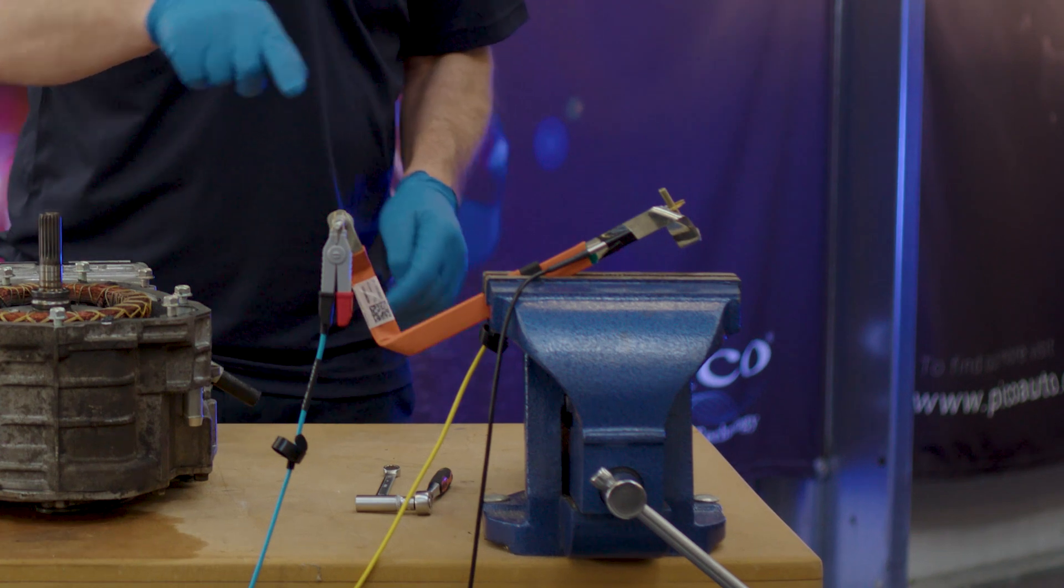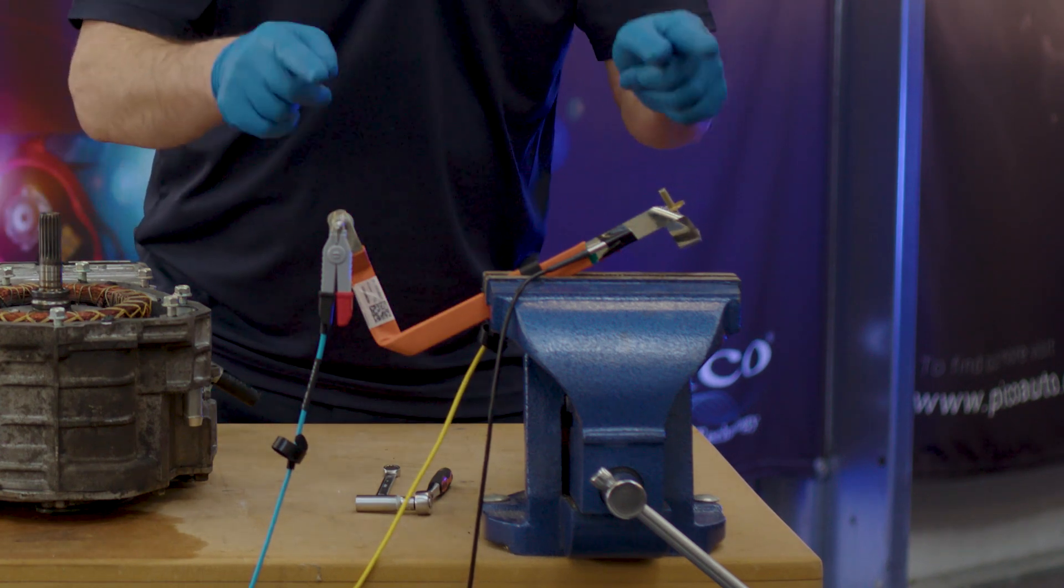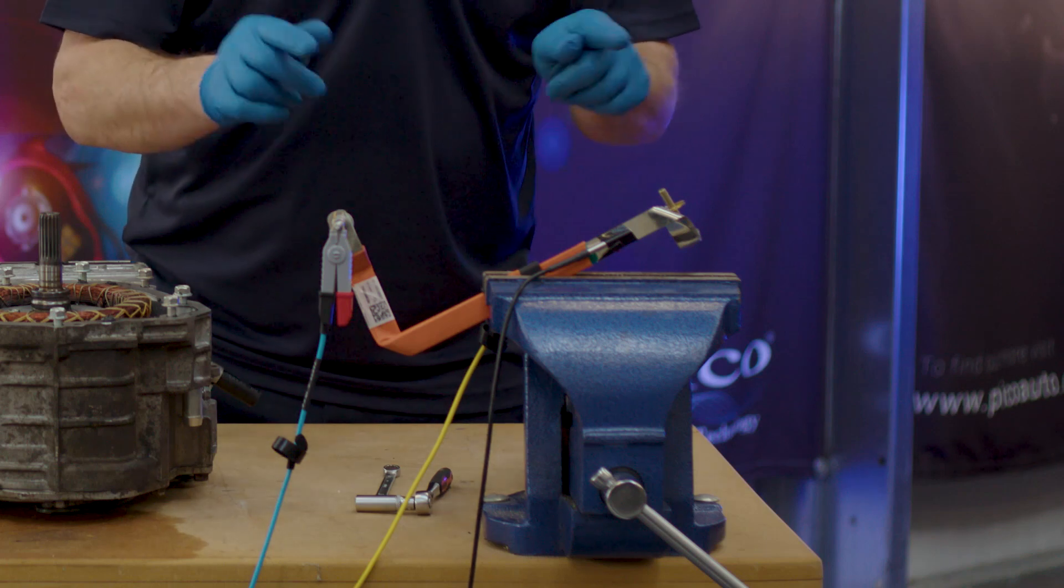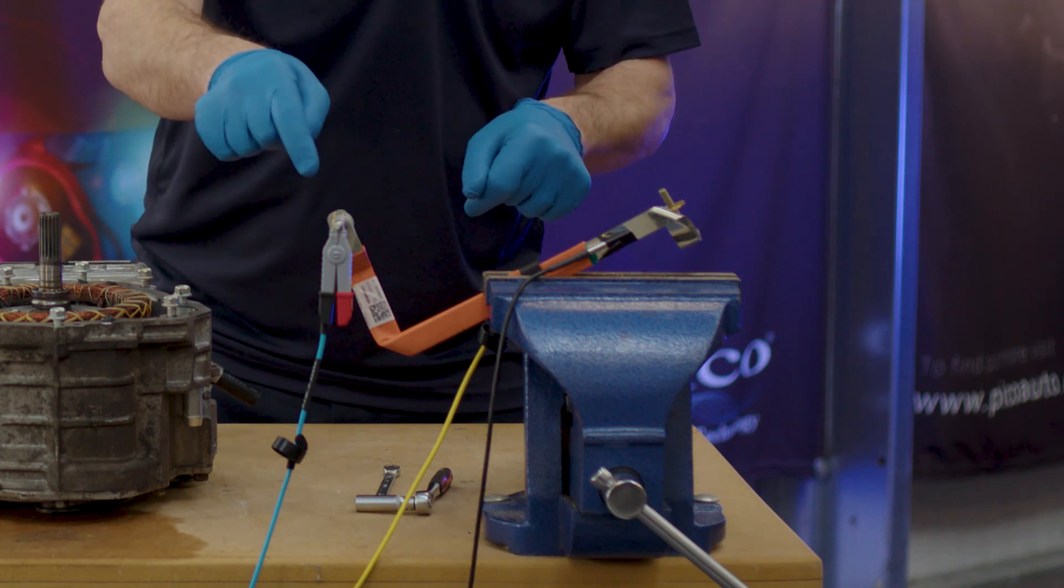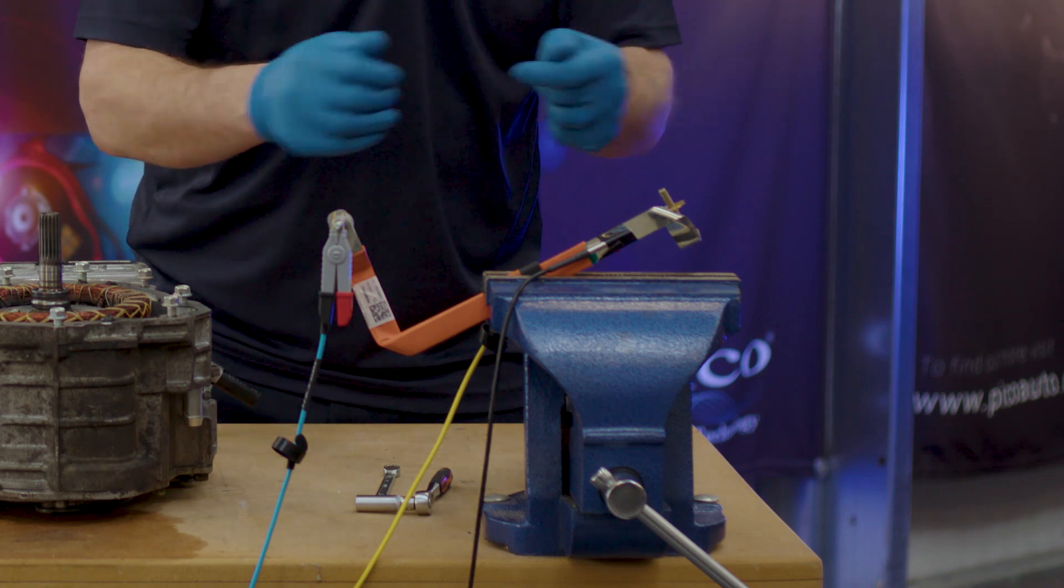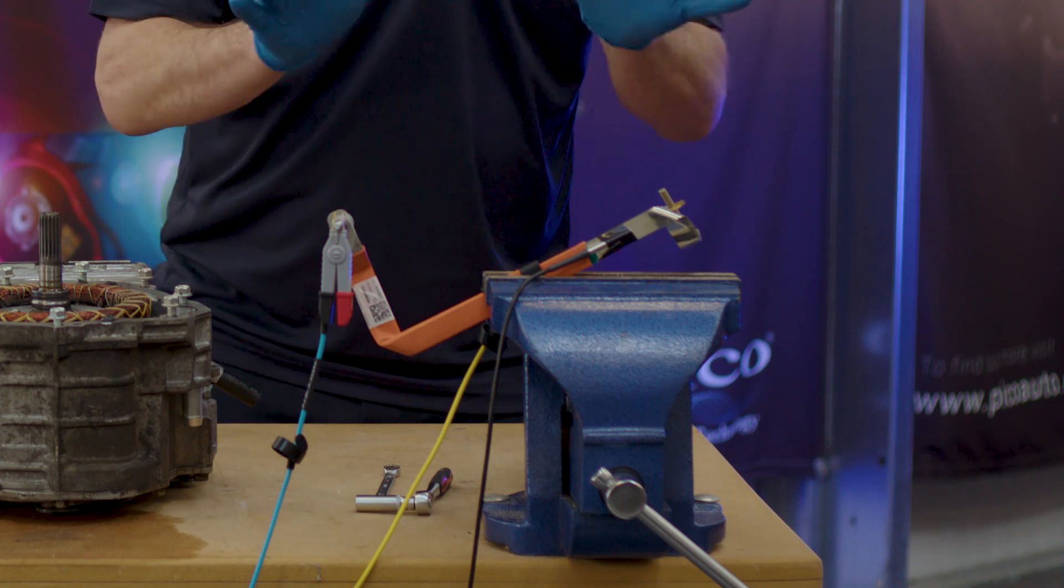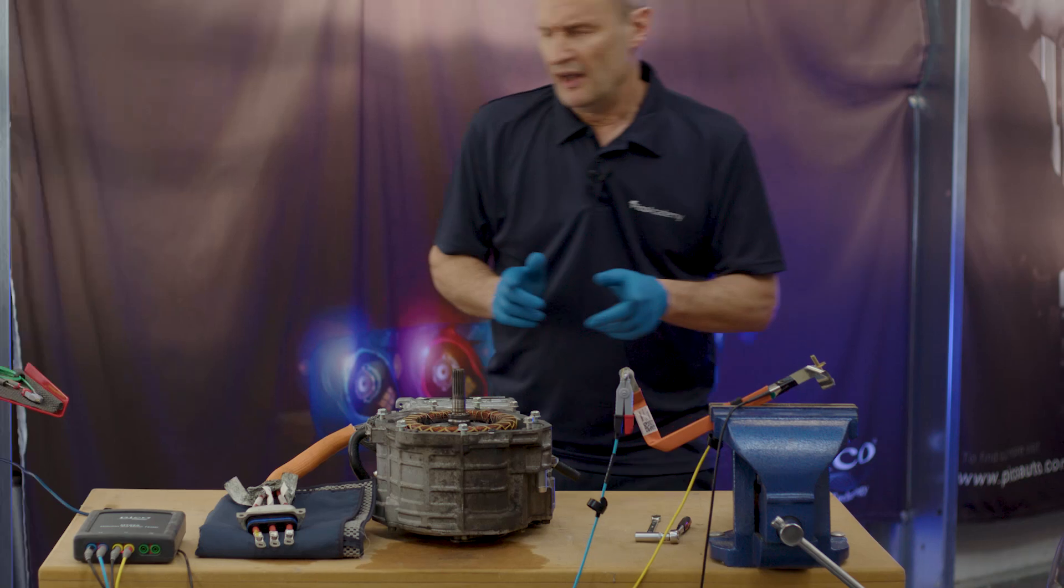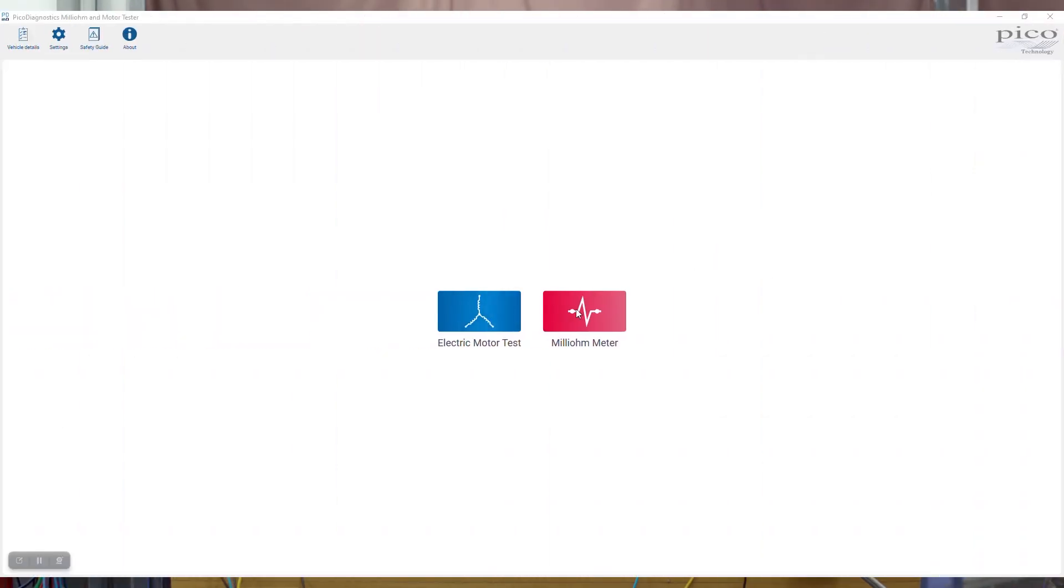We're going to measure the resistance between these two points now on the bus bar. We have two eyelets and through those eyelets we have two bolts. Our Kelvin clips are attached to each bolt, so we'll get the resistance through the bus bar and ultimately the contact connection through the bolts as well. It'll be an entire measurement. We'll move across now to the software, it's a milli-ohm meter test.